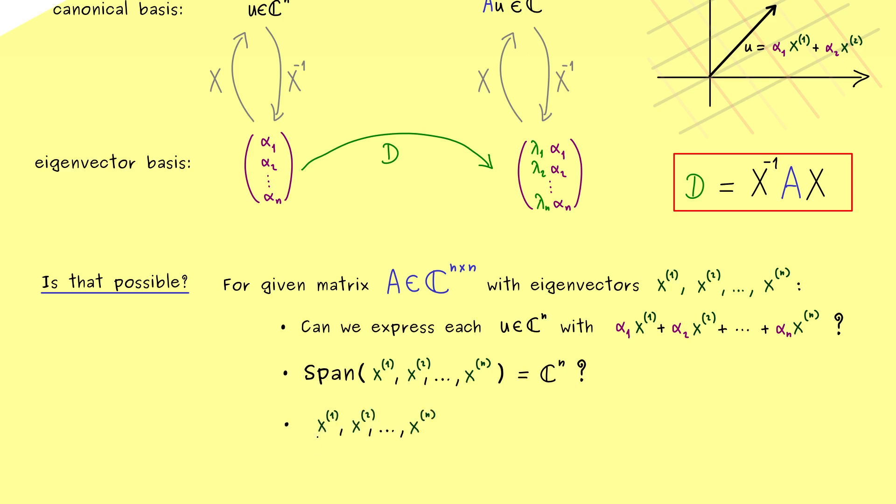So we can reformulate this question in a shorter way. This is now very simple: is the set given as the span of the vectors x1 to xn equal to C^n? And again, if we have that, the picture from above works.